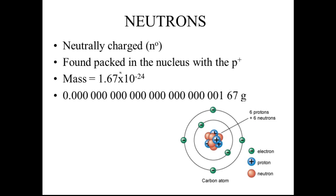Neutrons are neutrally charged and found inside the nucleus with the protons. Here's their mass — take a look at how unbelievably tiny that mass is. This is why experimenters came up with the AMU. One neutron is equal to one AMU. It's basically a unit they use because the actual gram mass is way, way, way too small.